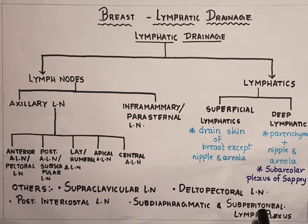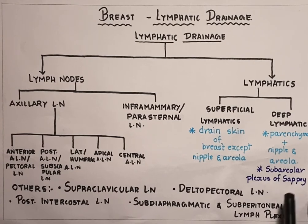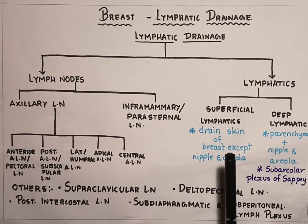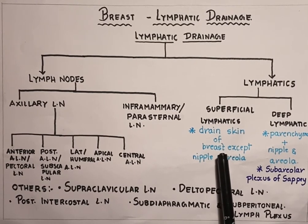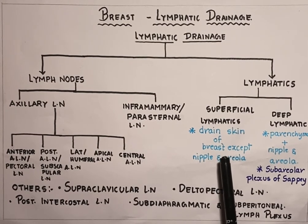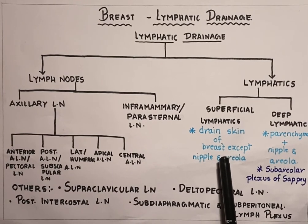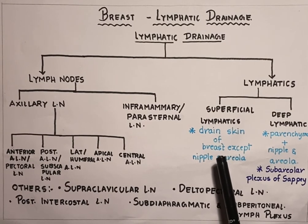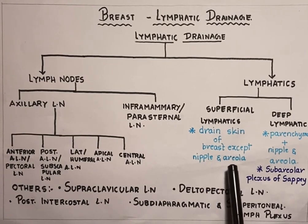Deep to the areola, there is a network of lymphatic vessels known as the subareolar plexus of Sappey. An important point is that the superficial lymphatics of one side communicate with the superficial lymphatics of the other side. Therefore, a unilateral malignancy may become bilateral — meaning a tumour on one side of the breast may reach the other side via the superficial lymphatics. Thank you very much.